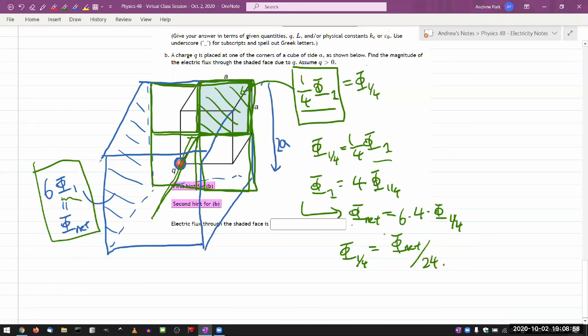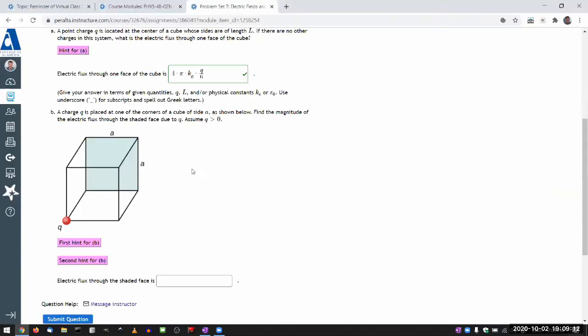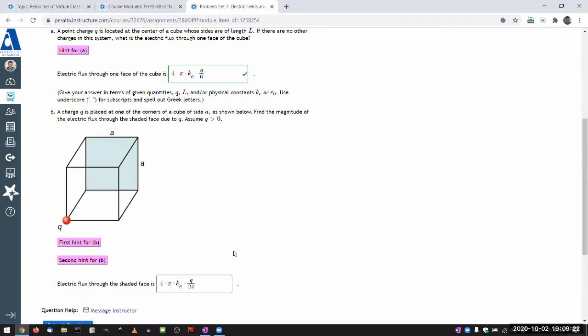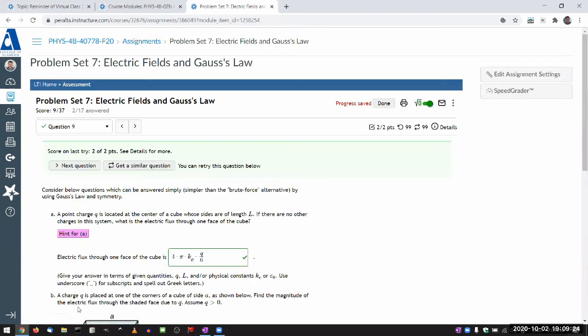φ net, I have expression for that from Gauss's law, this should be equal to 4π times Coulomb constant times the charge enclosed, so let me plug that in, so 4π Coulomb constant times charge enclosed divided by 24, and I can simplify, and that gives you the correct answer.